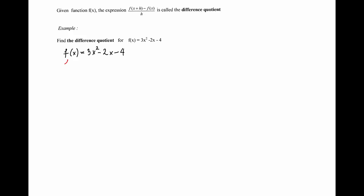The next component of the difference quotient is the expression for f(x+h). f(x+h) is the value of the function at the input x plus h. So this is 3 times (x+h) squared minus 2(x+h) minus 4.